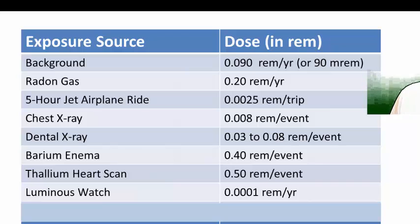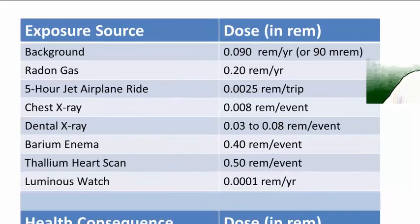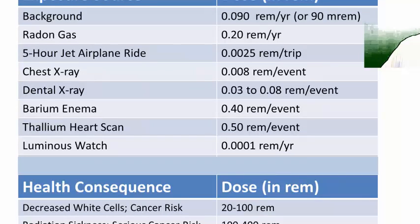An average person in the United States is exposed to 0.3 to 0.4 REMs per year — that's 300 to 400 milli-REMs per year. The Environmental Protection Agency, the Nuclear Regulatory Commission, and OSHA have set limits for exposure to radiation, particularly for people who work with radiation sources, stating that the maximum you should be exposed to per year is five REMs. As you can see from this table, unless you're getting a lot of thallium heart scans or barium enemas, you won't add up to five REMs unless you're actually working with radiation.